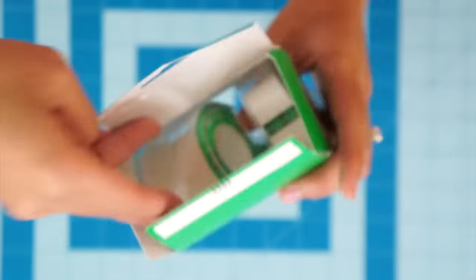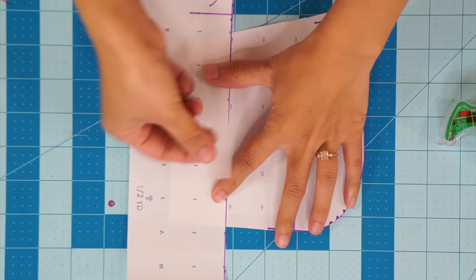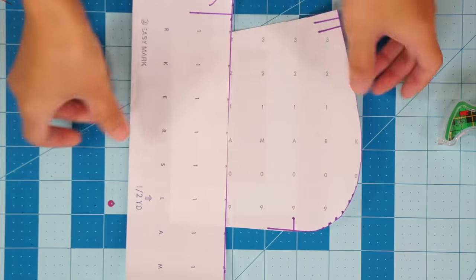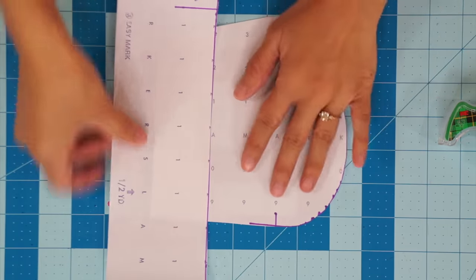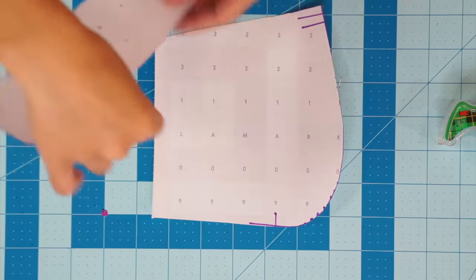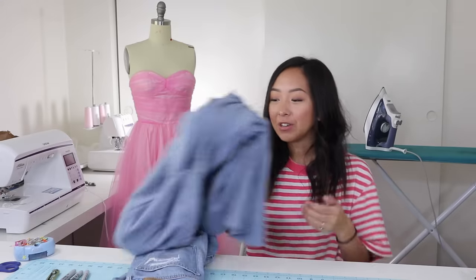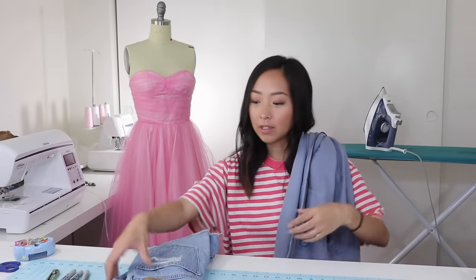You'll also need some magic tape and you want to use this kind of tape because it's very easy to peel off paper and in pattern making we will be taping and untaping our patterns all day long. And lastly grab whatever clothes that you want to trace today.